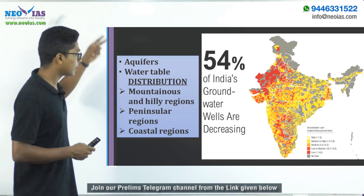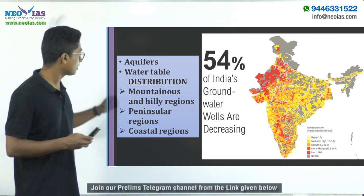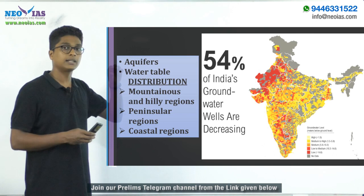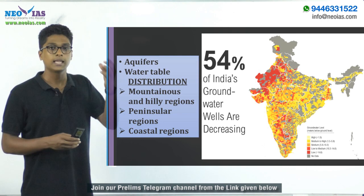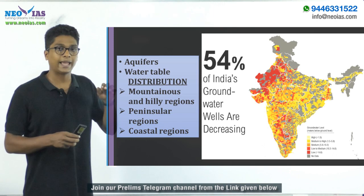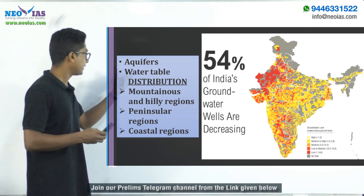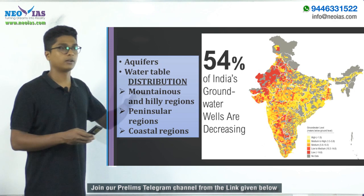There are two terms related to groundwater you need to keep in mind. The first is 'aquifer' — the regions where groundwater is stored. Imagine the top surface of the crust: rock, soil, and everything. Water seeps below this surface and gets collected in certain regions, and those regions we call aquifers.